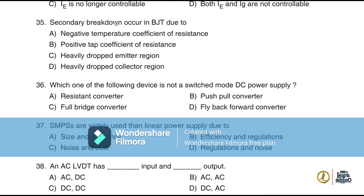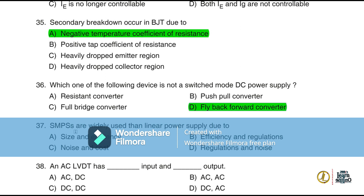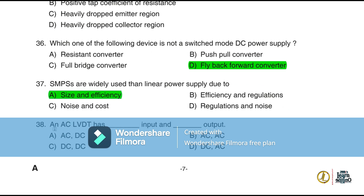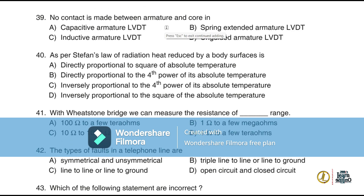Question 35: Secondary breakdown occurs in BJT due to negative temperature coefficient of resistance. Question 36: The fly-back forward converter (option D) is not a switched-mode DC power supply type. Question 37: SMPS are widely used over linear power supplies due to size and efficiency advantages. Question 38: An AC LVDT has AC input and AC output; no contact is made between the armature and core in a non-guided armature LVDT.